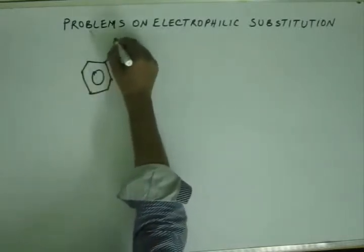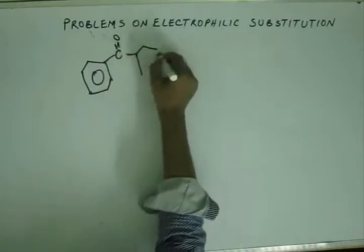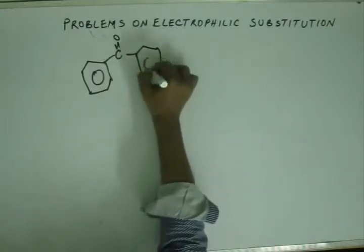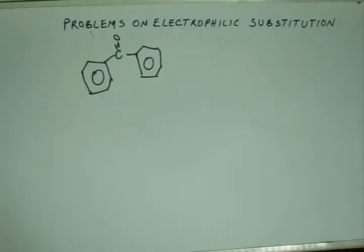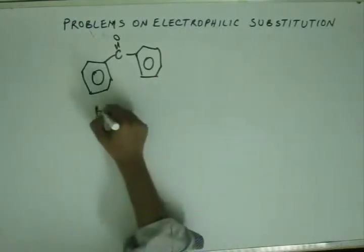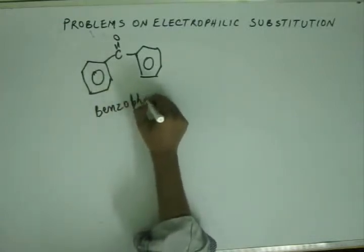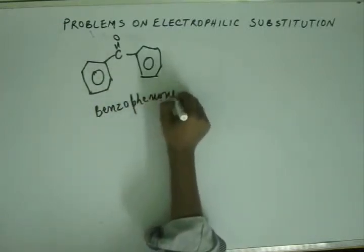Now, if asked to get Benzophenone — two phenyl groups on both sides of a C=O — this is called Benzophenone, which is the common name. Benzophenone is very common, and whenever this term is used in problems, they will never draw the structure. You need to know it.